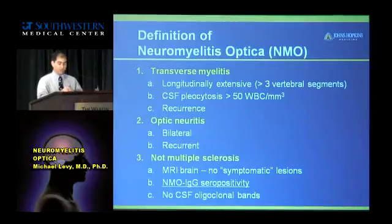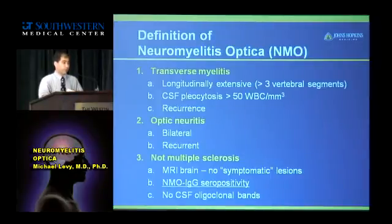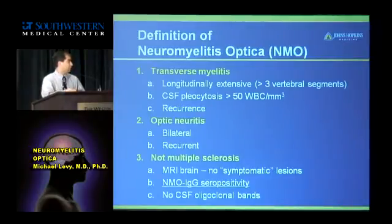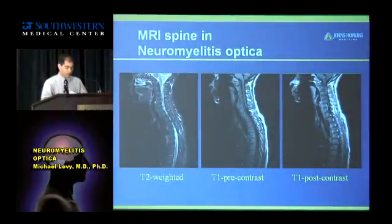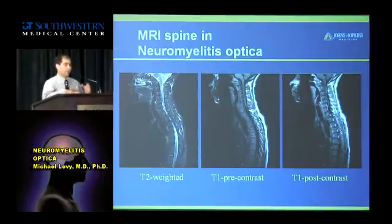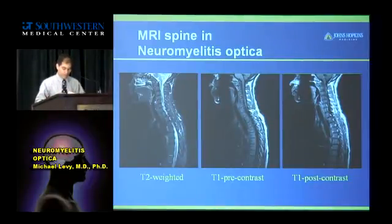To rule out MS, we use a combination of the brain MRI and an NMO IgG blood test, which is very specific for NMO. If you're positive for that test, you should very strongly consider NMO as the diagnosis. You also tend not to have oligoclonal bands, which you often see in MS. This is a typical MRI of a patient with NMO — there's a white area within the gray spinal cord corresponding to a longitudinally extensive lesion, with enhancement indicating inflammation in the cervical spine. These are clues that help distinguish NMO from MS.